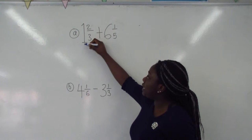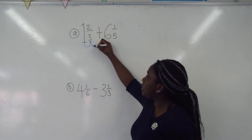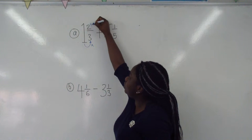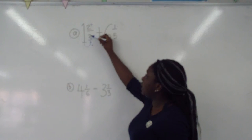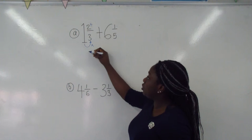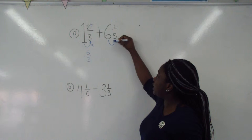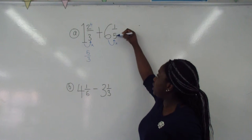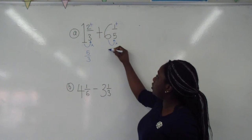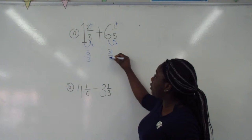So what I do is the big number times the bottom number, and I'll add the little two on top. So one times three is three, add two, you get five out of three. For this one, it'll be big six times five, which is 30, add the little one, which is 31 out of five.